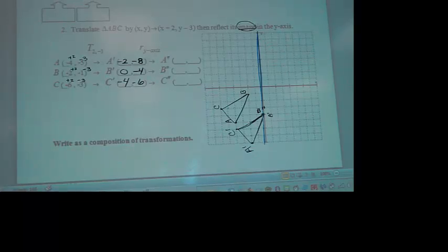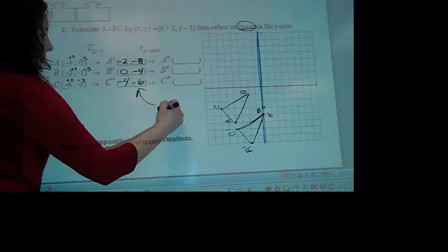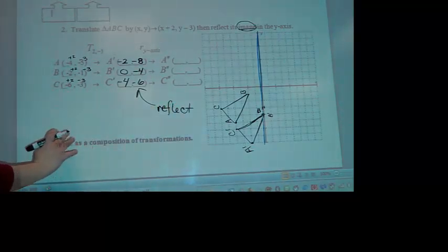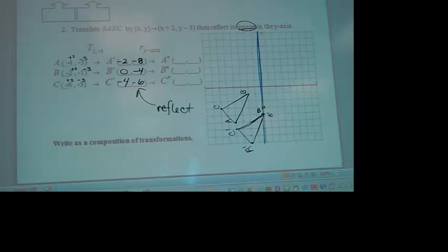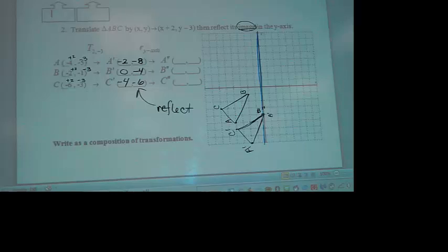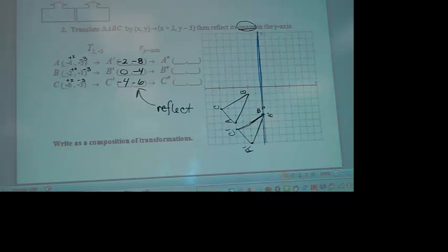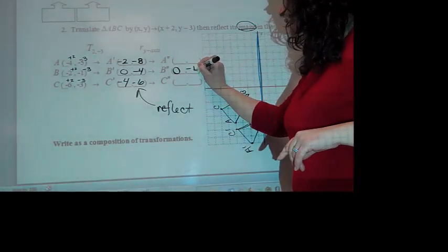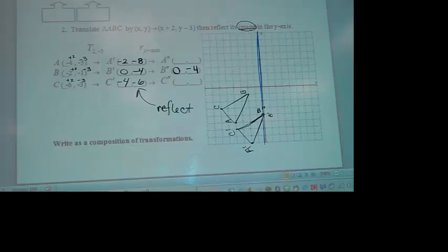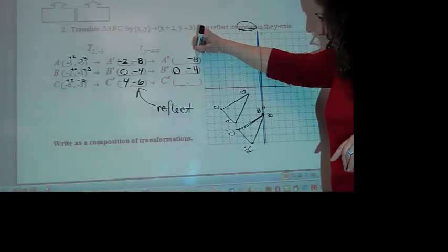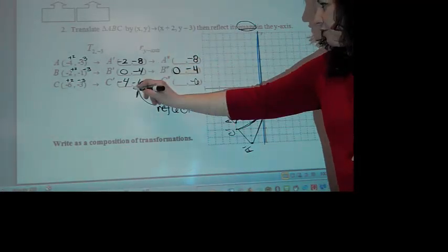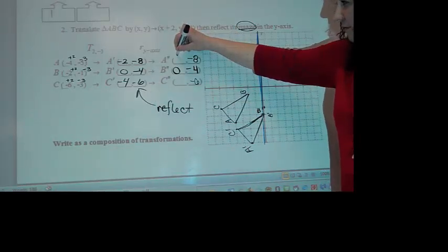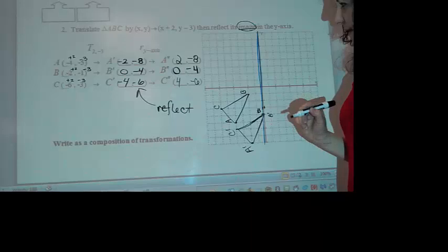It says reflect its image, so you want to reflect this one here. Compositions, they're always based on the one before it, so you kind of have to do the first part right to get the second part completely right, to get the third part completely right. They all build on each other. So B prime should be in the same exact spot, 0, negative 4. What's the rule again for reflecting over the Y? What do you keep the same? The Ys. So this should be negative 8. This should be negative 6. And then what do you do with the 2 and the 4? So it's positive 2 and positive 4.